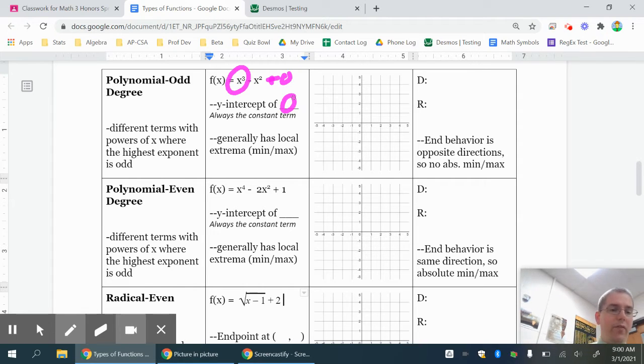Now if I was going to look at the graph of this, I could try factoring it. I can factor out an x squared, which leaves me an x squared and an x minus one. That means my solutions or my x-intercepts are zero and one. So I have the y-intercept at zero with an x-intercept at zero, of course, and then also an x-intercept at one right there.